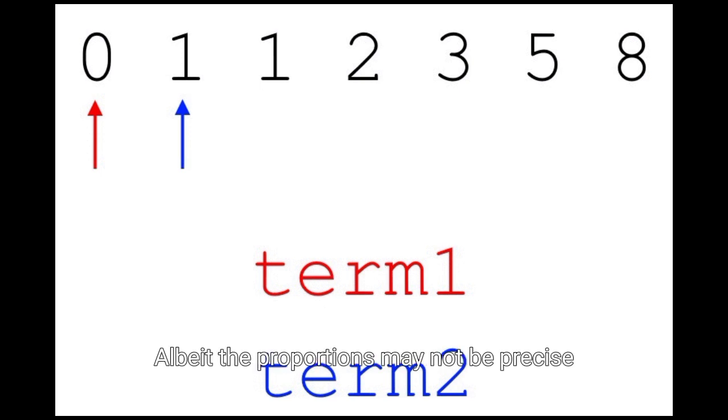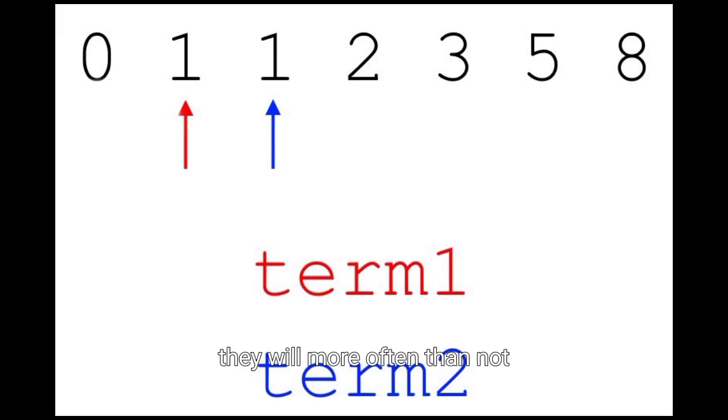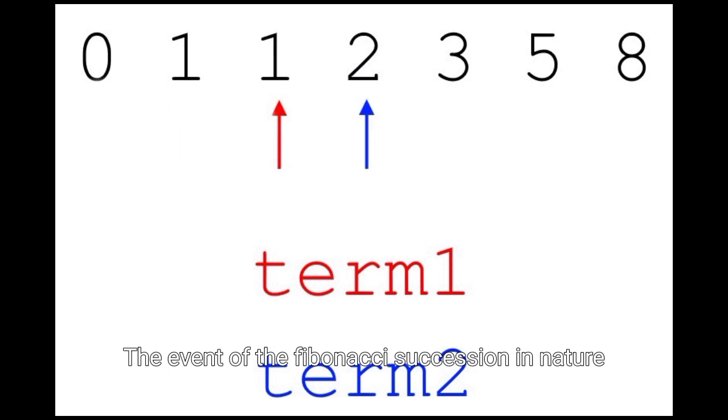Albeit the proportions may not be precise, they will more often than not estimated Fibonacci numbers. The event of the Fibonacci succession in nature can be credited to a mix of variables, including productivity, development enhancement,